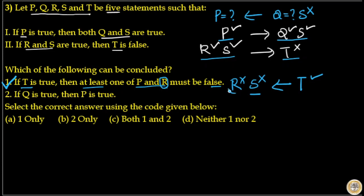And if you look at conclusion 2: if Q is true, then P is true. If Q is true, we don't know the status of S here. From the first statement, when both Q and S are true, P is true. But when Q is true and we don't know the status of S, we cannot find the status of P.